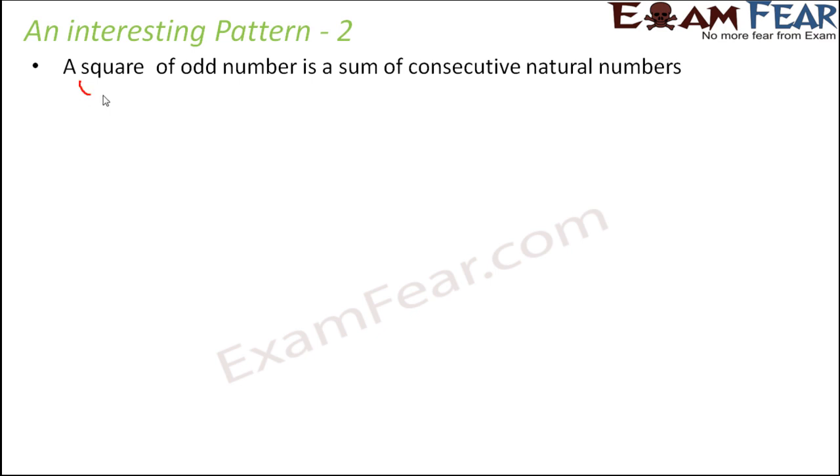Can you give some examples of square of odd number? Is 4 a square of odd number? No, because 4 is 2 square, so 2 is an even number. Is 9 a square of odd numbers? 9 is 3 square, so 3 is an odd number. So 9 is a square of odd number.